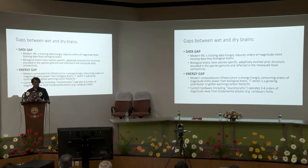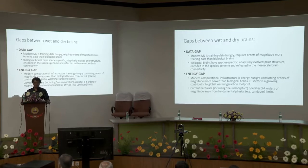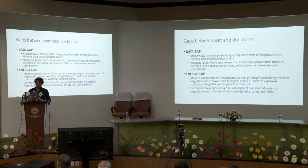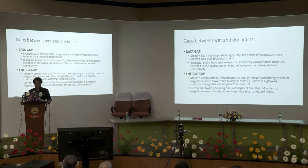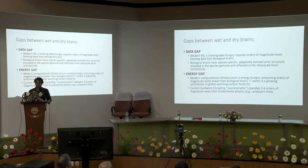There are two gaps between the wet brains and dry brains. I call the first one the data gap: modern machine learning is very training-data hungry. It requires a lot more data than biological brains. If we really understand how biological brains work, we will be able to get rid of that matrix — humans should not be in pods. We need to free those humans by working on biological brains to understand how to annotate less data and close the data gap.